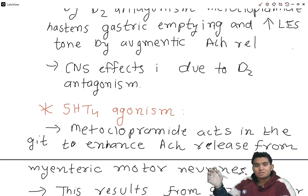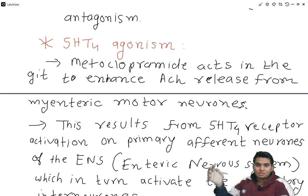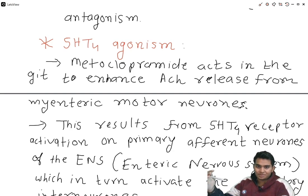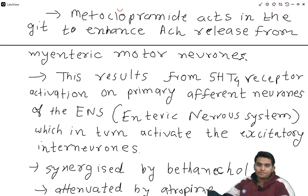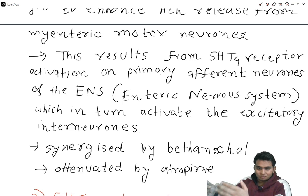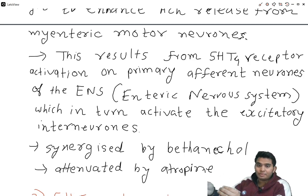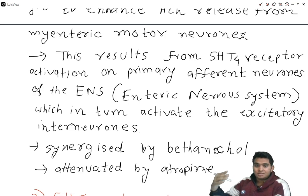The second mechanism is 5-HT4 agonism. Metoclopramide acts in the GIT to enhance acetylcholine release from myenteric motor neurons through 5-HT4 receptor activation on primary afferent neurons of the enteric nervous system, which in turn activates excitatory enteric neurons, increasing acetylcholine release and mediating gastric emptying. This effect is synergized by bethanechol and attenuated by atropine — blocking cholinergic effects with atropine reduces metoclopramide's effect.